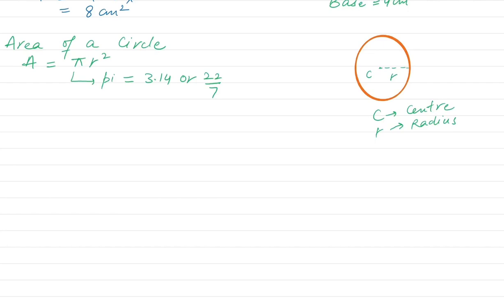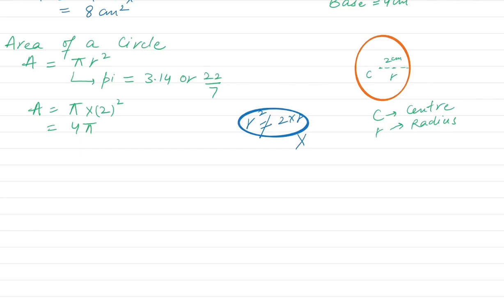Keep in mind it is r squared. Suppose we have the radius given as 2 centimeters. The area will be equal to pi times 2 squared. 2 squared is 4, so the answer is 4 pi. We can also substitute the value of pi and multiply by 4. Remember, r squared is not equal to 2 times r — it is r times r. Never forget this.